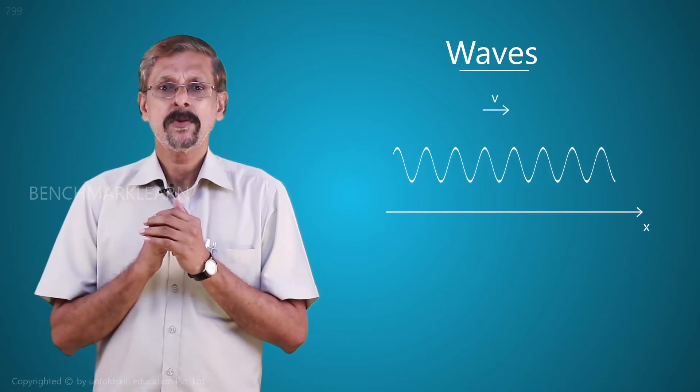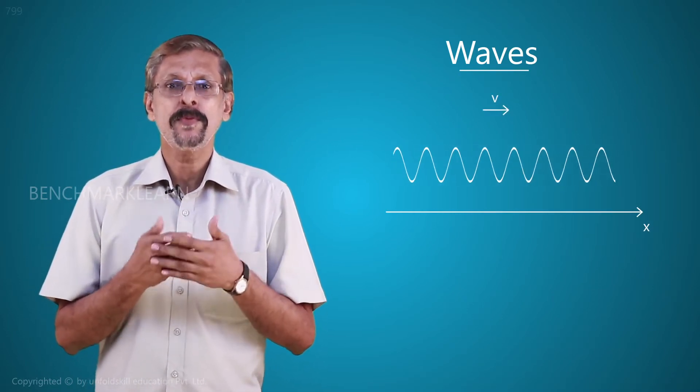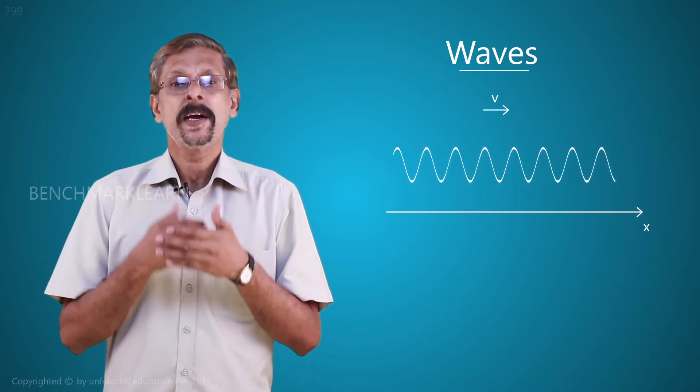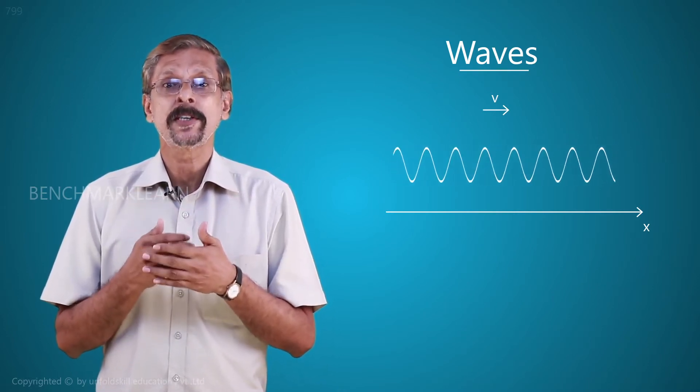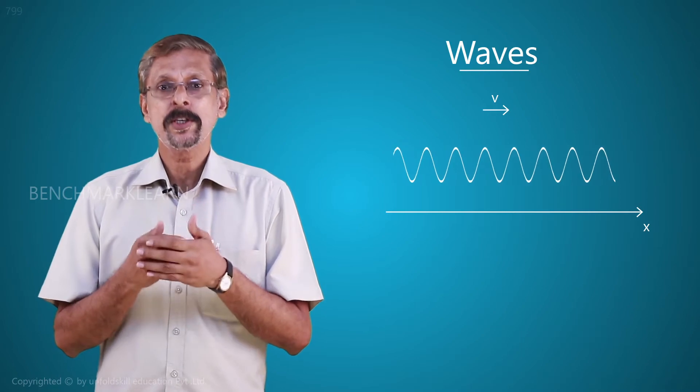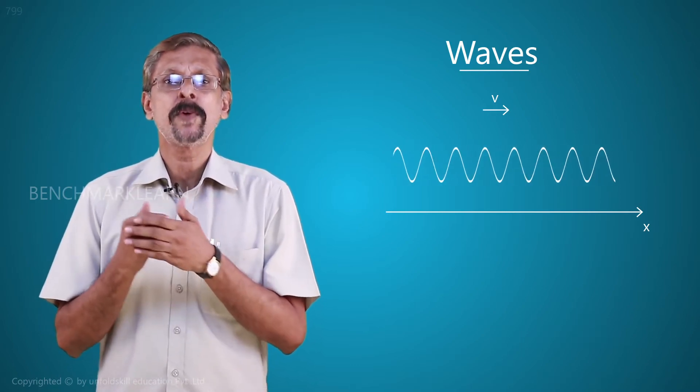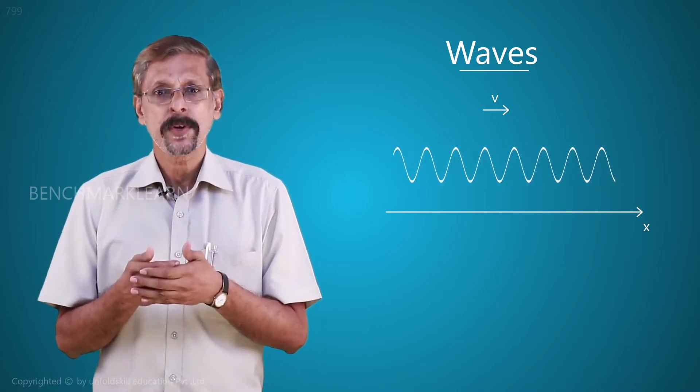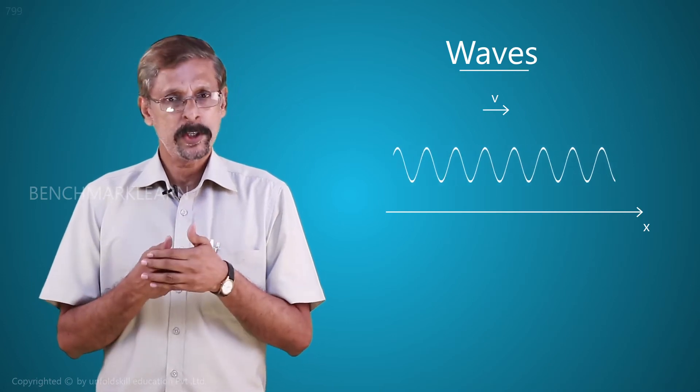As it moves through the x direction, it will have different values of displacement at different points of space and time. That means when the position is different, it will have a different value of displacement. When the time is different, it will have a different value of displacement.